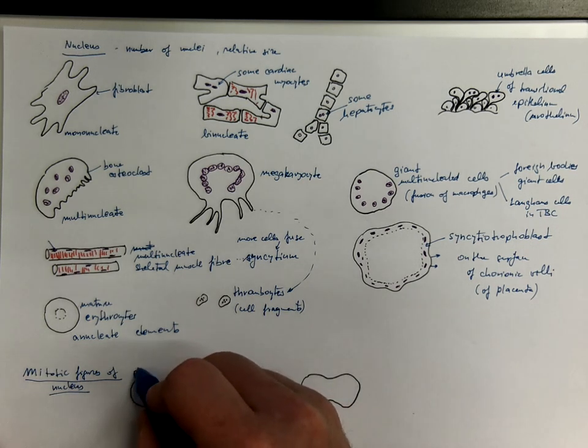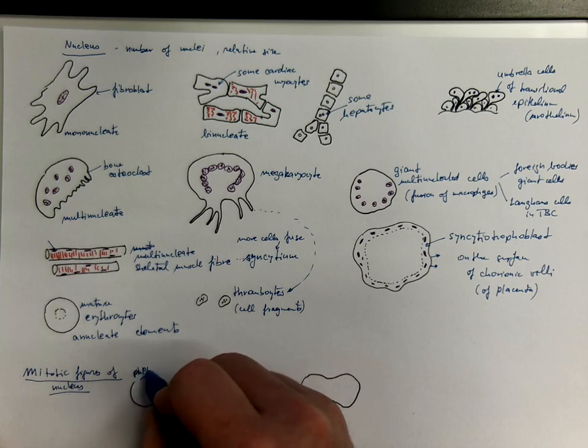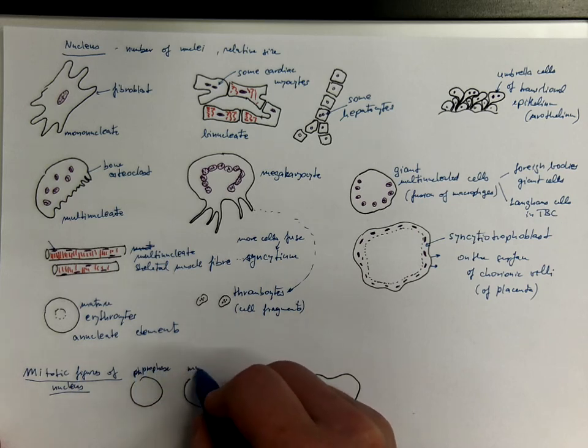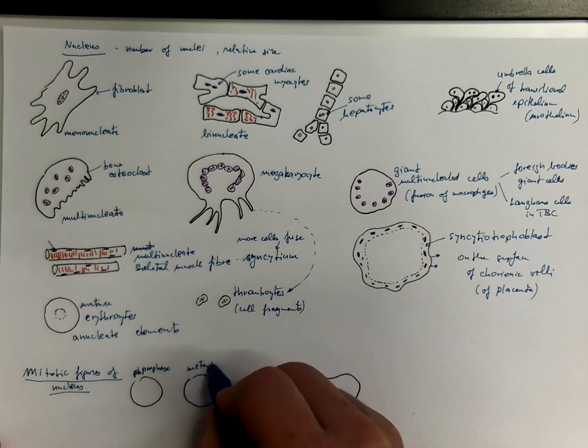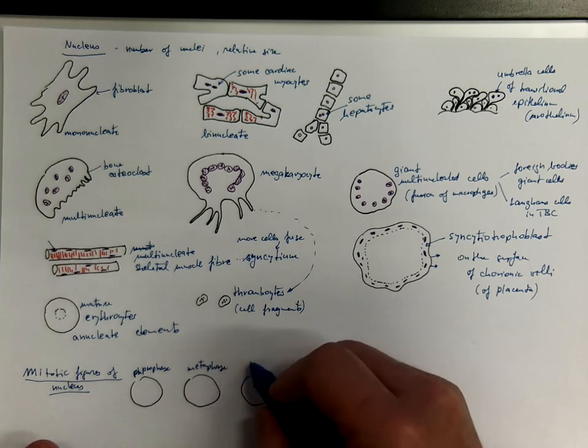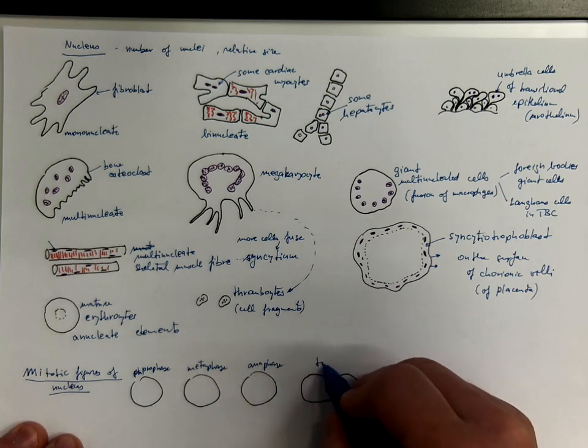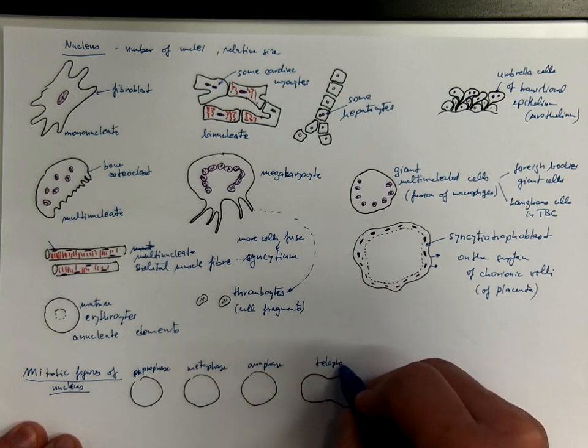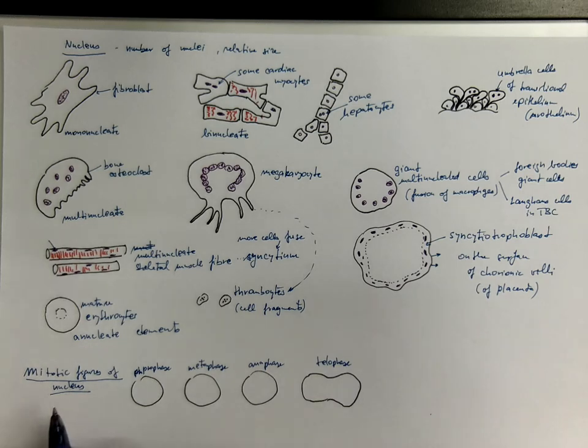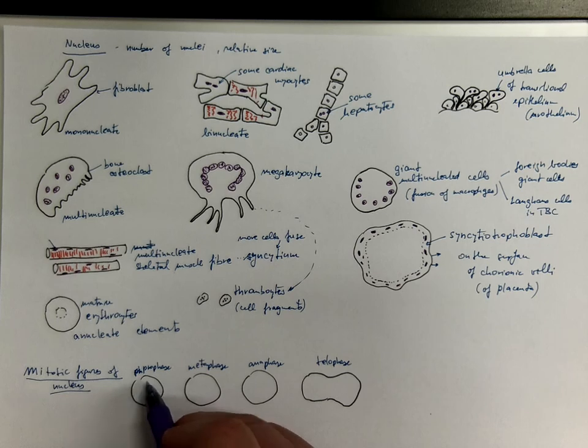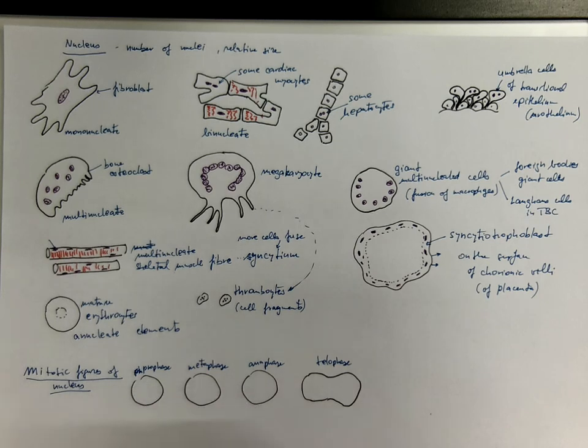Prophase. Metaphase. Anaphase. Telophase. So, during mitosis, the DNA gets organized into chromosomes, which become visible in histological sections.